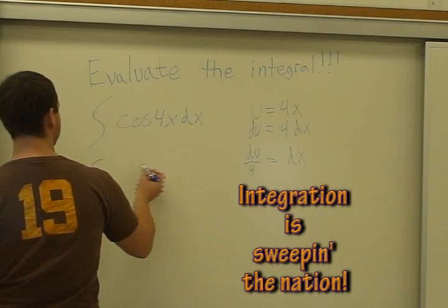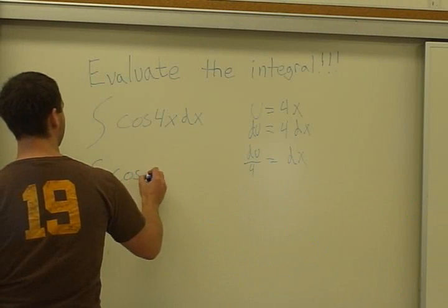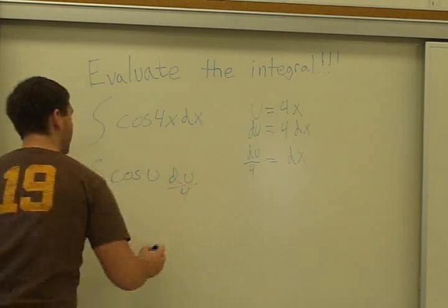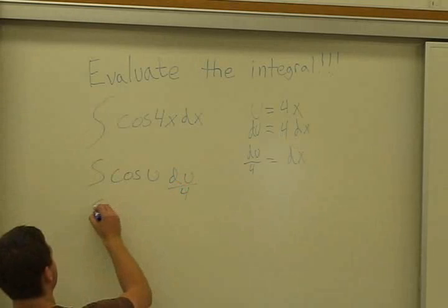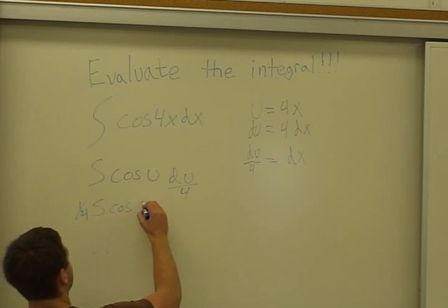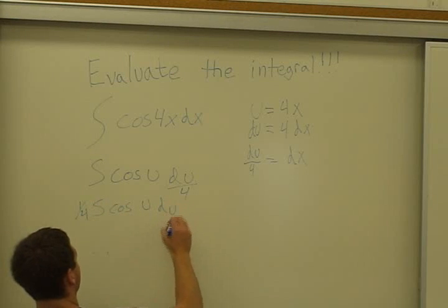So in terms of u, we have cosine u du divided by 4. We can pull this 1/4 out, and do that with cosine u du right here.